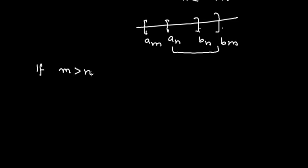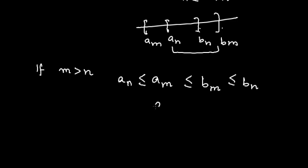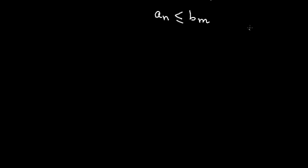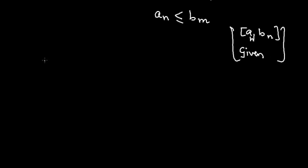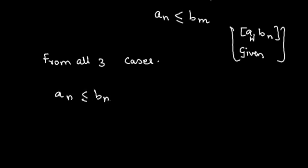Now M can also be greater than N. In that scenario it will be the opposite: AN ≤ AM ≤ BM ≤ BN. So again we get AN ≤ BM. This is happening because we are given the closed interval [AN, BN]. So from all three cases, we have AN ≤ BM for all N and M greater than or equal to 1.